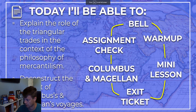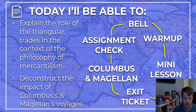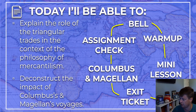Here are our goals for today. We're going to look at something called the triangular trades and try to understand what those were. We're also going to look at how those operated in the context of something called mercantilism, to lay out the basis of how the world is functioning at this point in the Atlantic around 1700. Lastly, you'll finish up by looking at the impact of Columbus's and Magellan's voyages and how those fit into the larger context of what's happened in the last 200 years.